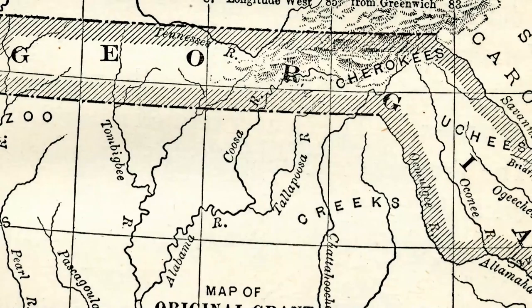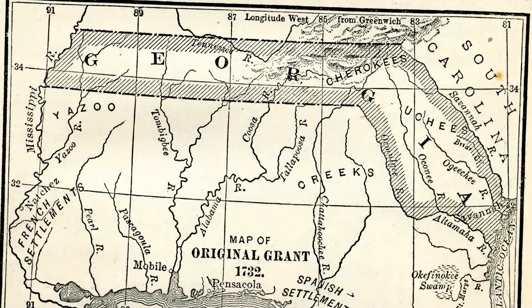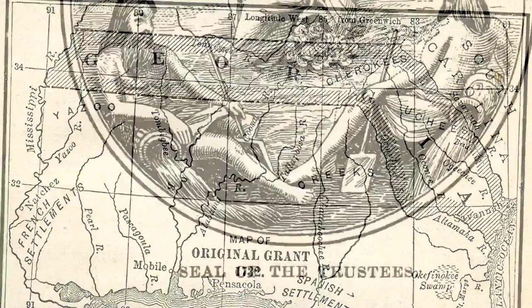Oglethorpe and Dr. Bray's Associates decided the best way to make life better for England's poor was by making a new colony in North America where they could start over. In 1732, they got the King's approval to found a new colony between Spanish Florida and English South Carolina. The purpose of the colony would be to help relieve the poor, bring wealth to England, and defend against the Spanish in the South.